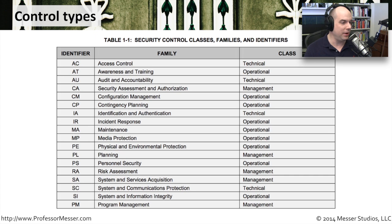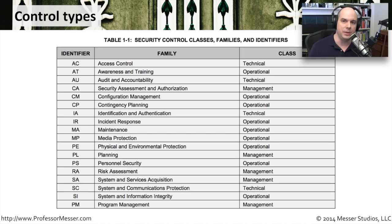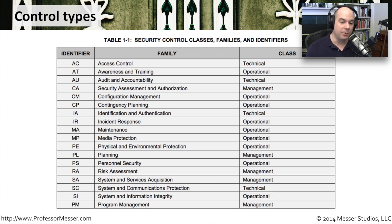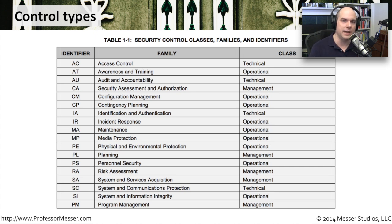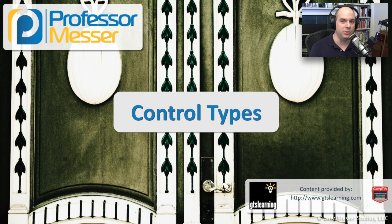For the purposes of the Security+ exam, you don't have to remember all the identifiers. But it's useful to know the three classes — technical, operational, and management — and understand why the different families are associated with each class. They make a lot of sense: technical covers access control and firewall configuration; operationally, you want awareness and training. If you have time, read through the document — it's a very comprehensive overview of how the federal government uses these classes to control and manage their security, and you could probably apply many of these things to your own environment as well.